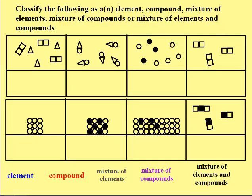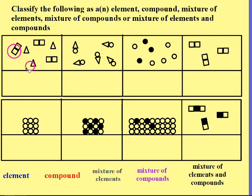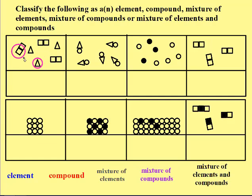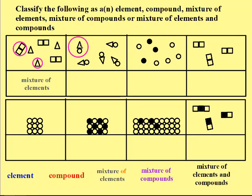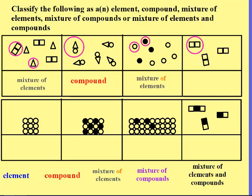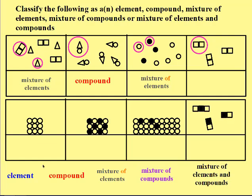Pause the video and figure out if these are elements, pure compounds, a mixture of elements, a mixture of compounds, or a mixture of elements and compounds. For the first one, we had two types of particles — both elements — so that's a mixture of elements. For the second one, just one type of particle with two different types of atoms, so that's a compound. For the third one, two types of particles, both elements, so that's a mixture of elements. The fourth one has one type of particle with the same type of atom, therefore it must be an element.